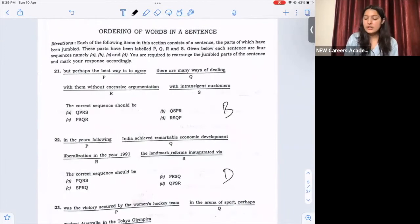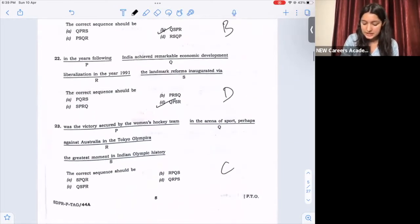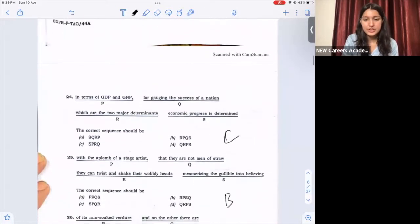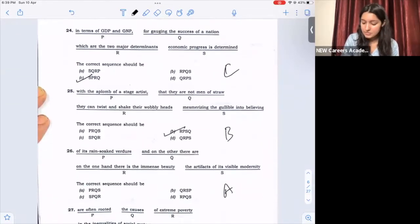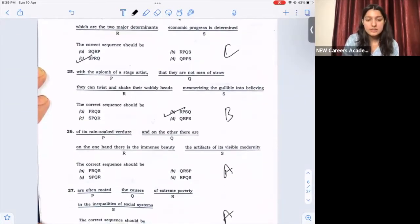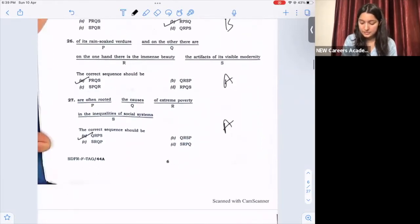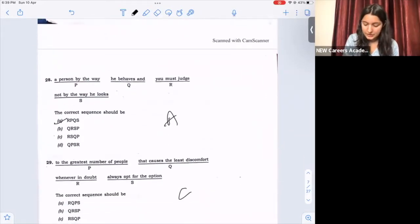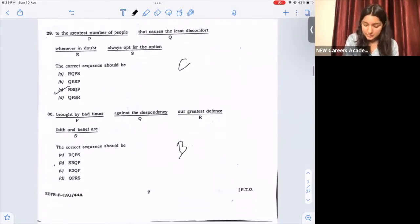Next, ordering of words in a sentence. Question number 21, answer is option B. 22, answer is option D. 23, option C correct answer. Question number 24, C. 25, option B. 26, option A. 27, option A. 28, option A. 29, option C. Question number 30, option B.